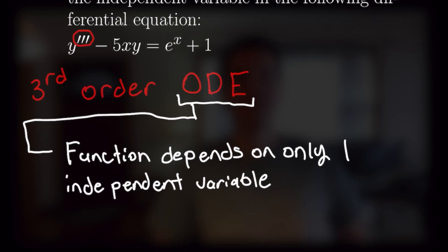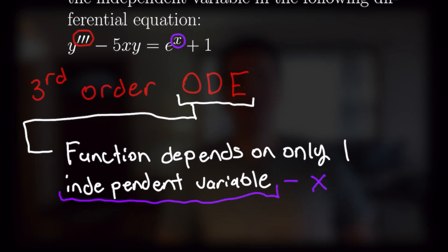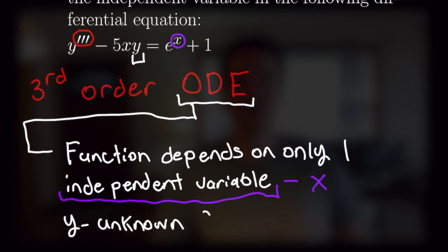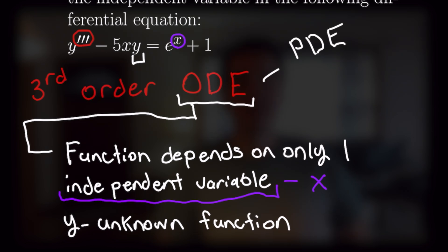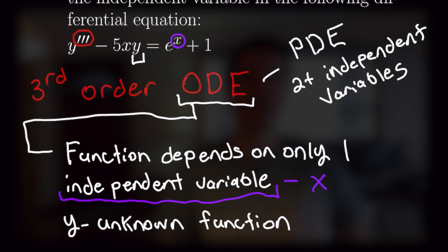An ODE is a function that depends only on one independent variable. In this equation, our independent variable is x, but some books may use t or another letter to represent their independent variable as the standard for an ODE. And that of course makes y our unknown function. The counterpart to an ODE is a PDE, or partial differential equation, which has two or more independent variables. That's about all for this first example, so let's get to the second one.